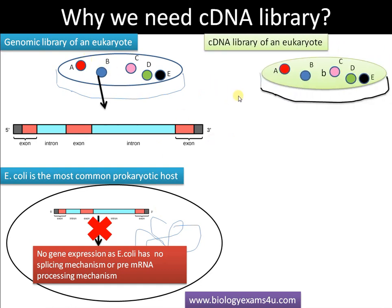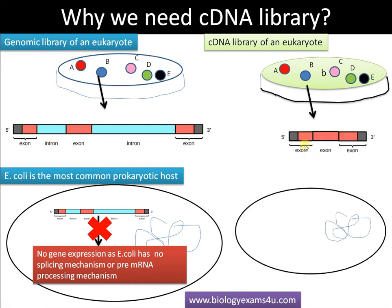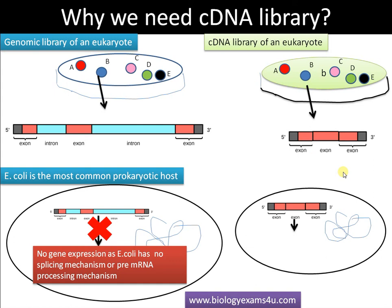Here comes the advantage of the cDNA library. A cDNA library is similar to a genomic library, except that here the cDNA is cloned. cDNA is made from processed mRNA where introns are removed and exons are joined. We make cDNA from mRNA by reverse transcription. Since this cDNA doesn't have introns, we can use it for expression inside a prokaryotic host very easily.